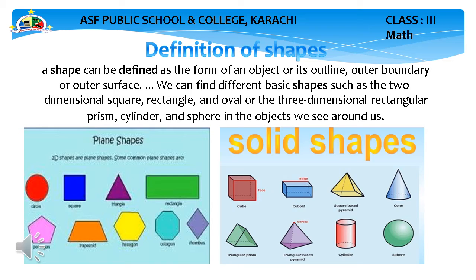Look at the picture here. Plane shapes — it means 2D; D stands for dimensional, 2 means two dimensions: length and breadth. Examples: square, circle, triangle, rectangle, pentagon. These are the plane shapes. Second are solid shapes — solid shapes are 3D, three dimensional. Examples include cube, square pyramid, cone, prism, and rectangular shapes. These are called solid shapes.